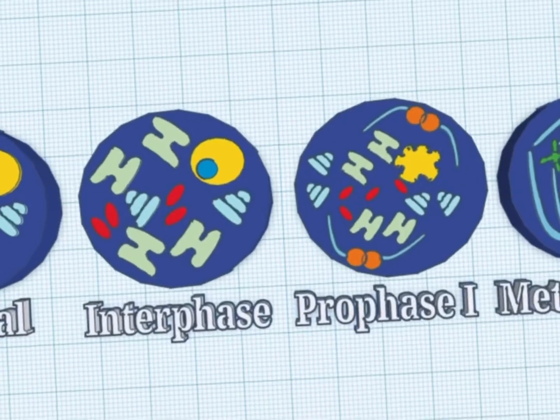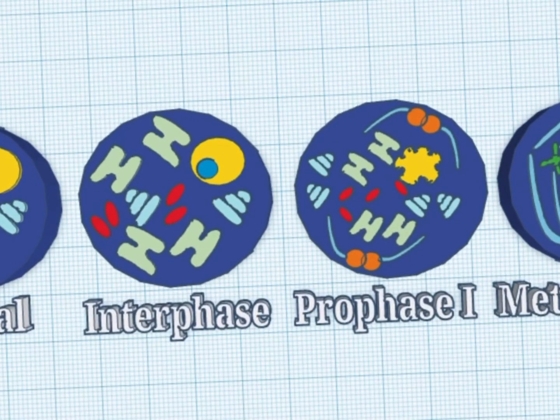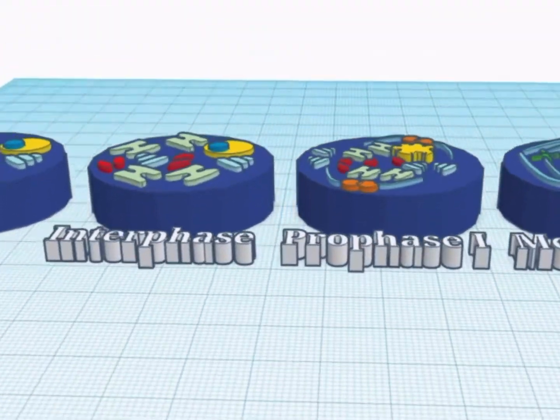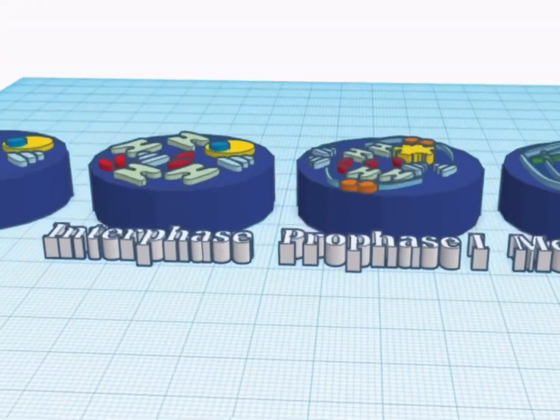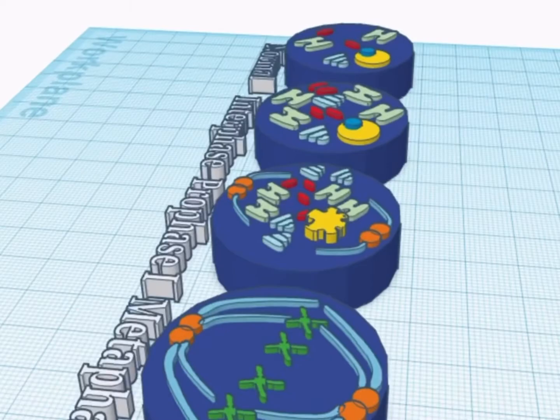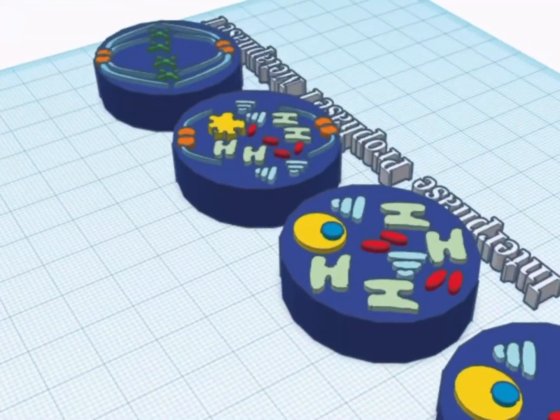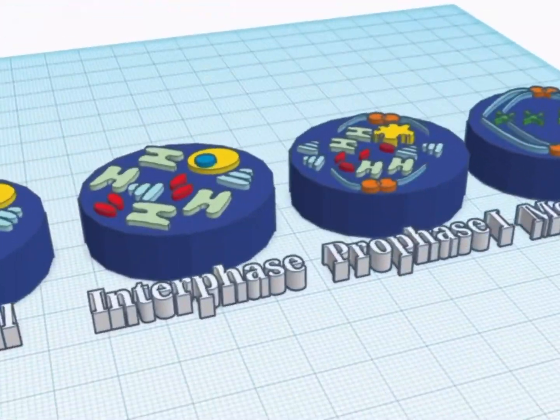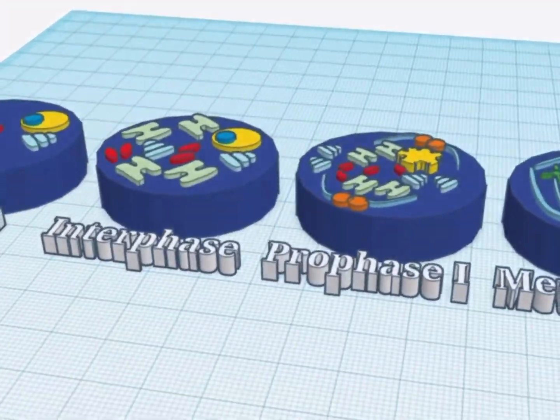Sexual reproduction uses a form of cell division called meiosis that allows the sex cells to create four genetically different cells.